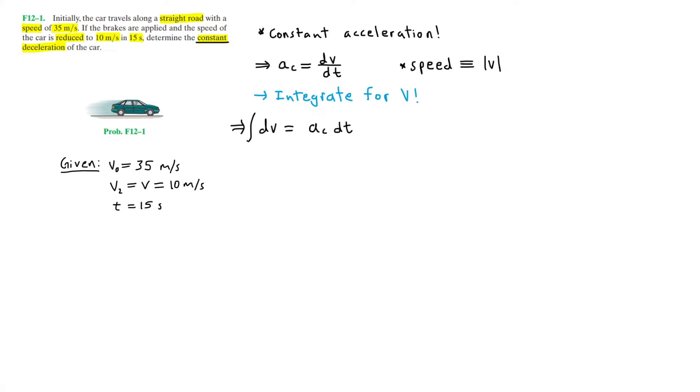I will integrate DV from V0, which is V initial, to some velocity V, assuming V0 is equal to V at T equals 0. So now on the other side, I will integrate from 0 to some time T. Hence, integrating on the left side, we have V minus V0, which is equal to, integrating on the right side, A sub C times T.